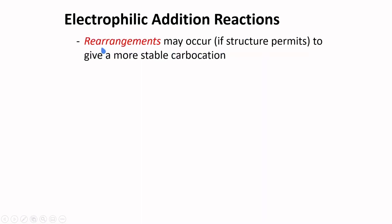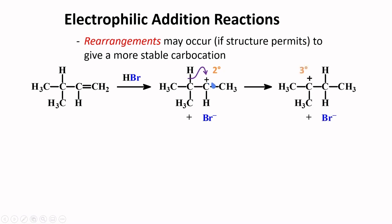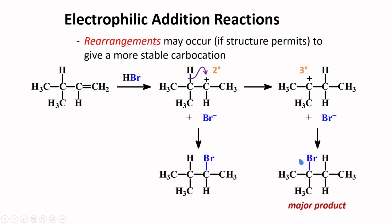In reactions that form carbocations, rearrangements may occur if the structure permits to give a more stable carbocation. For example, if HBr is added to this molecule, in the first step, this double bond will take this proton. This hydrogen will be expected to be added to this carbon to form this secondary carbocation. Given that the sigma bonds right next to this carbon can interact with the p orbital present here, this hydrogen may transfer to this carbon. This transfer will enable the formation of the more stable tertiary carbocation. If these two species were to react with the bromide, you can have two possible products, but this one coming from a tertiary carbocation will be the major product.